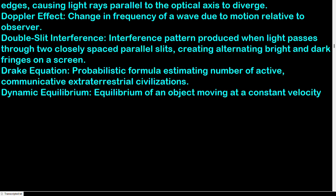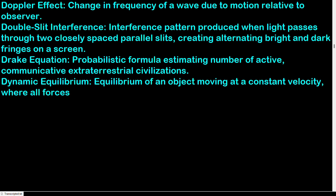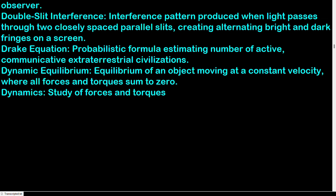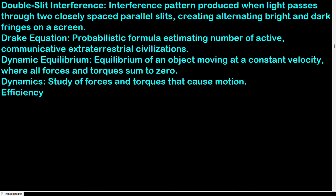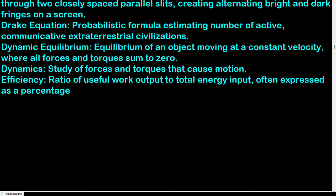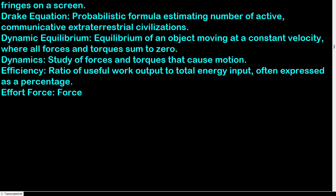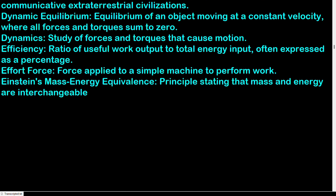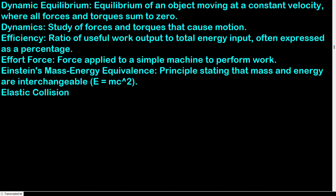Drake equation: probabilistic formula estimating the number of active communicative extraterrestrial civilizations. Dynamic equilibrium: equilibrium of an object moving at constant velocity where all forces and torques sum to zero. Dynamics: study of forces and torques that cause motion. Efficiency: ratio of useful work output to total energy input, often expressed as a percentage. Effort force: force applied to a simple machine to perform work.